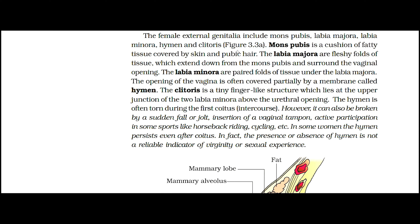Mons pubis is a cushion of fatty tissue covered by skin and pubic hair. The labia majora are fleshy folds of tissue which extend down from the mons pubis and surround the vaginal opening. The labia minora are paired folds of tissue under the labia majora. The opening of the vagina is often covered partially by a membrane called hymen. The clitoris is a tiny finger-like structure which lies at the upper junction of the two labia minora above the urethral opening. The hymen is often torn during the first coitus. However, it can also be broken by sudden fall or jolt, insertion of a vaginal tampon, or active participation in some sports like horseback riding and cycling. In some women, the hymen persists even after coitus. The presence or absence of hymen is not a reliable indicator of virginity or sexual experience.